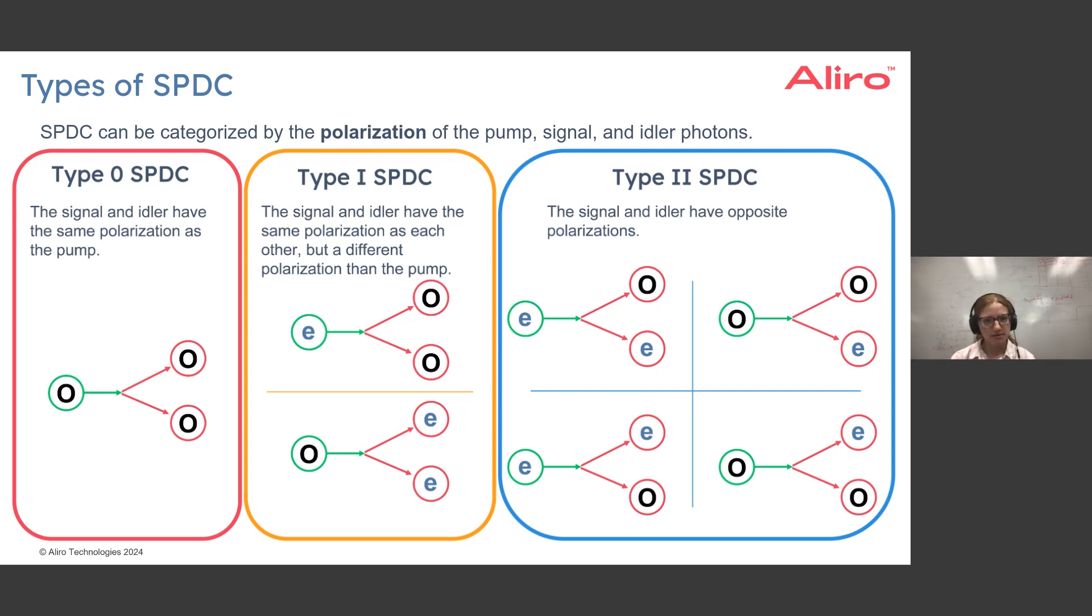We can have Type 0 spontaneous parametric down conversion, and for this type the signal and idler have the same polarization as the pump. Here we could have an ordinary polarized pump which produces ordinary polarized signal and ordinary polarized idler.